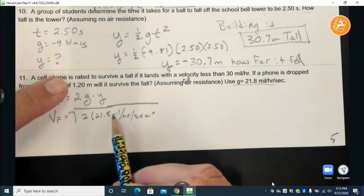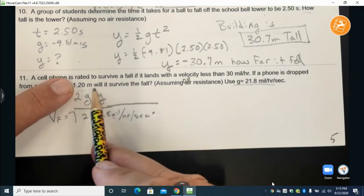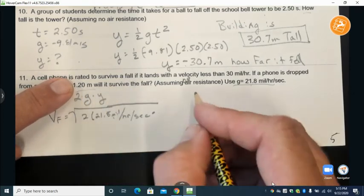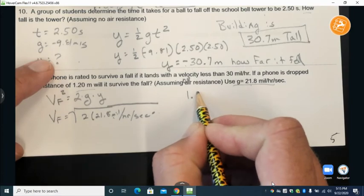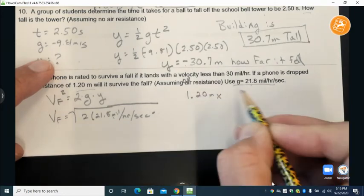Well our height is in miles and our given height is in meters. So we need to convert that. So we just come over here to the side. We go 1.20 meters, we multiply that by a ratio.